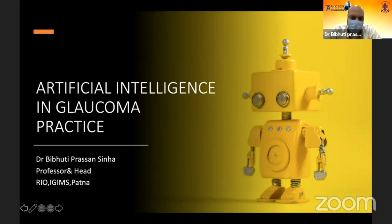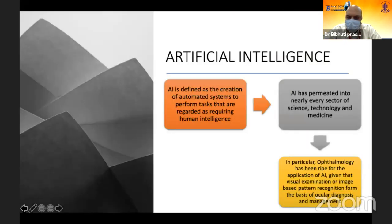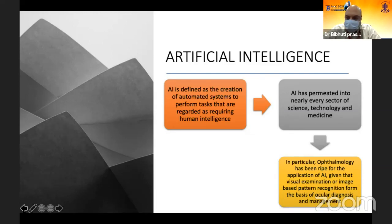I'll be a little brief as the introduction part has already been covered. But just to summarize, artificial intelligence is defined as creation of automated systems to perform tasks that are regarded as requiring human intelligence. It is one step ahead of human intelligence. AI has permeated into nearly every sector of science, technology and medicine, and the same is true for ophthalmology also.